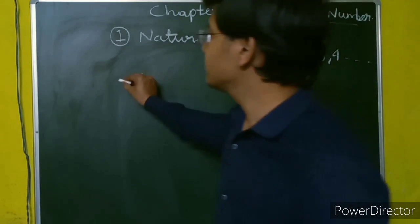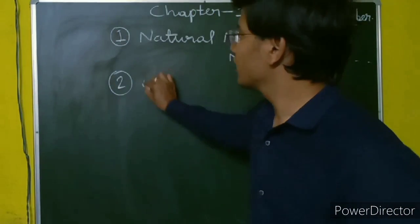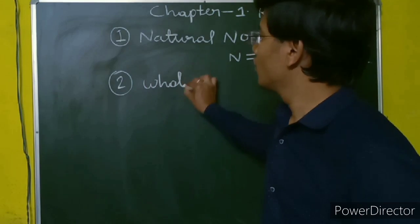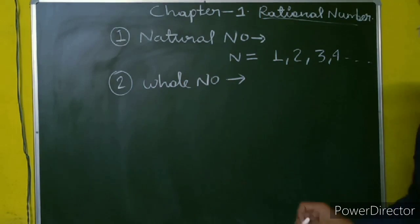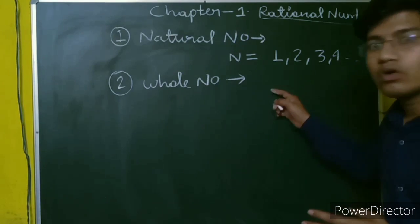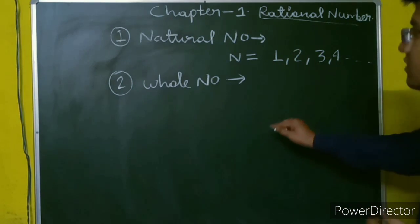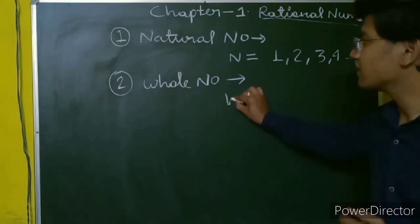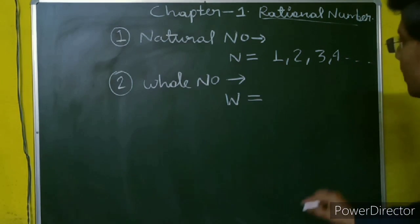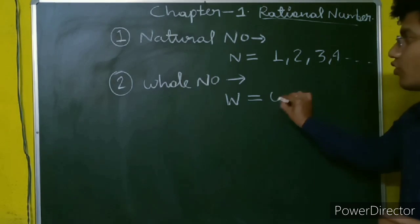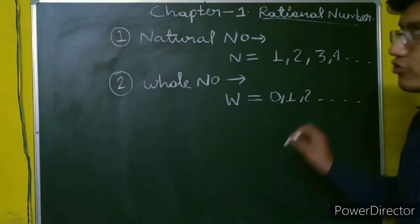The second set of numbers which we are going to study are whole numbers. Whole numbers are the numbers which we have when we put 0 before the natural numbers. Whole numbers are represented by W. So whole numbers equals to 0, 1, 2 and so on.